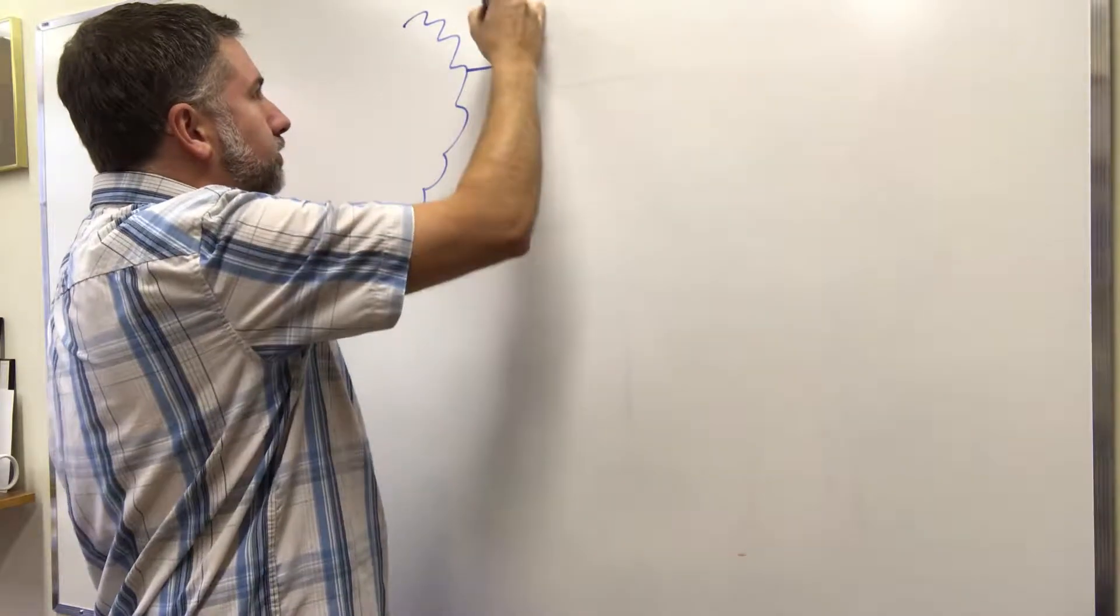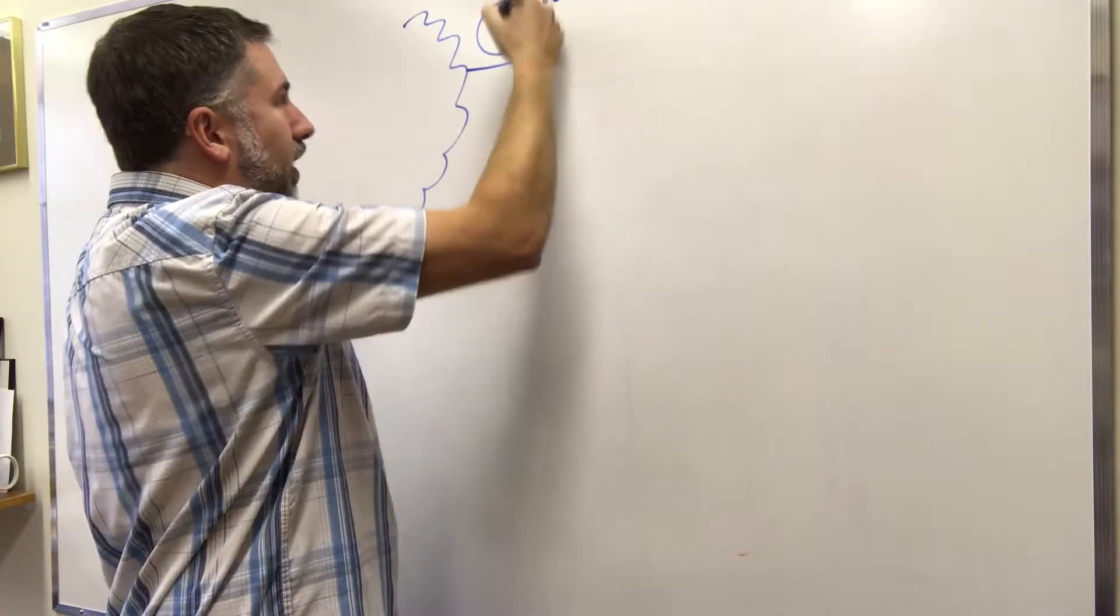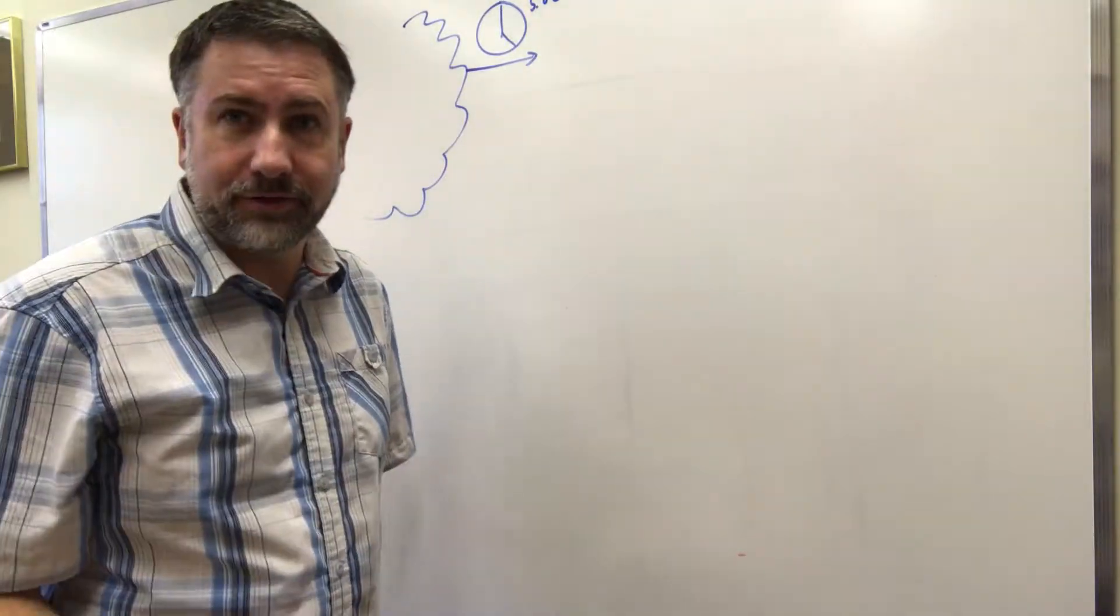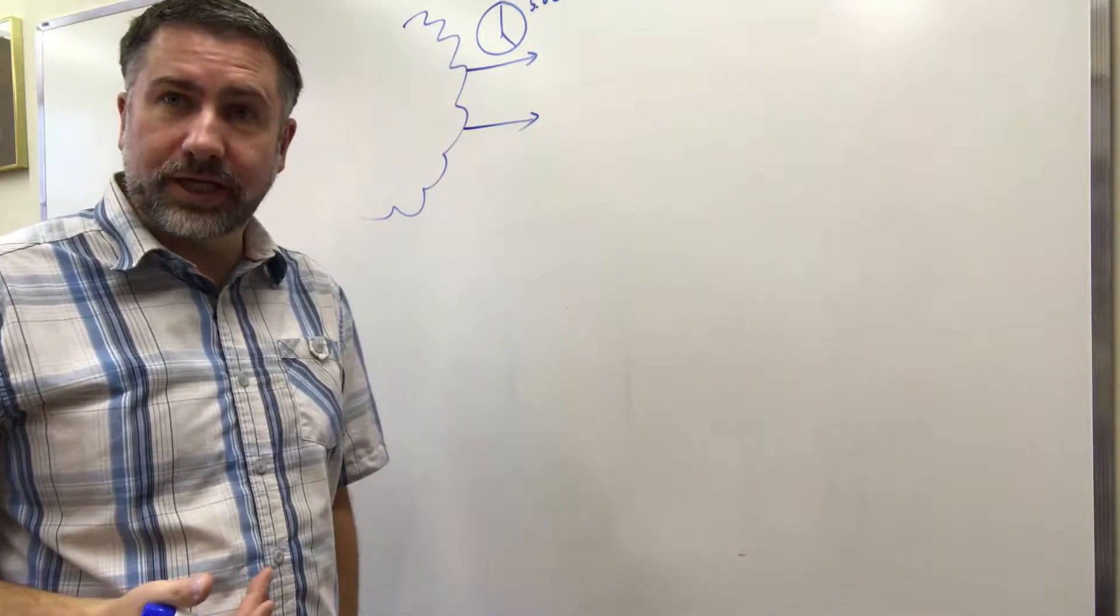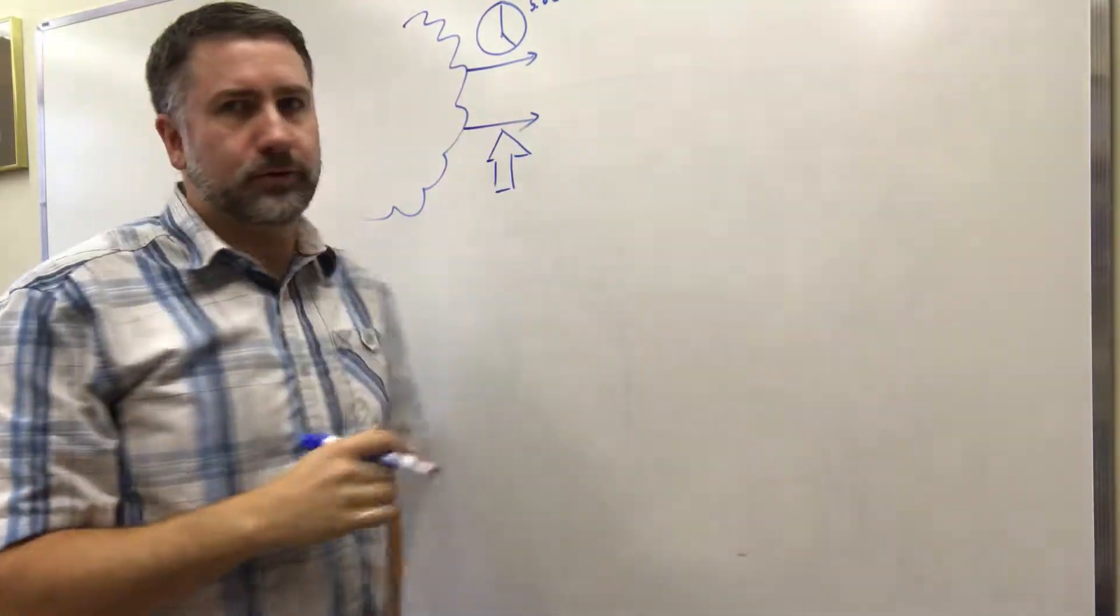So here is a clock that says it is currently 5 o'clock. When it's 5 o'clock this signal goes to 1, other than that it's at 0. Here is a piece of information from the outside world that says, I just arrived home.